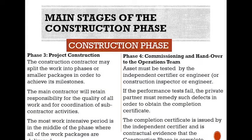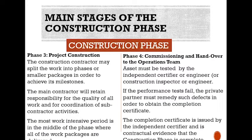Phase three: project construction. The construction contractor may split the work into phases or smaller packages in order to achieve its milestones. The main contractor will retain responsibility for the quality of all work and for coordination of subcontractor activities. The most work-intensive period is in the middle of the phase where all work packages are delivered. Phase four: commissioning and handing over to the operations team. Assets must be tested by the independent certifier or engineer. If performance tests fail, the private partner must remedy such defects in order to obtain the completion certificate, which is issued by the independent certifier and is contractual evidence that the construction phase is complete.